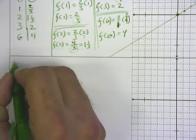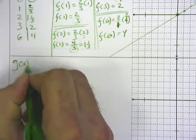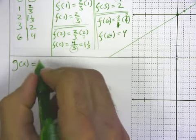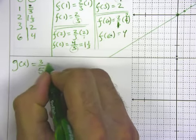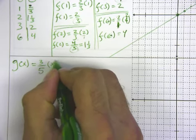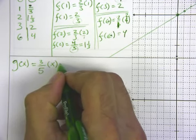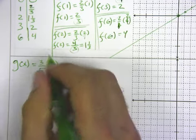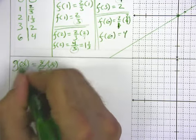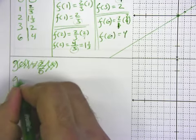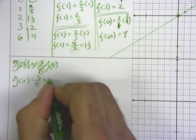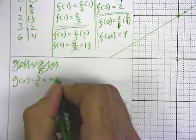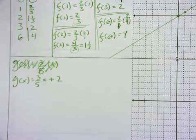All right, the next function I want to look at graphing is going to be g(x) equals - let's try - 3/5 x times... I didn't want to write it like that. g(x) is equal to 3/5 x plus 2, we'll say.